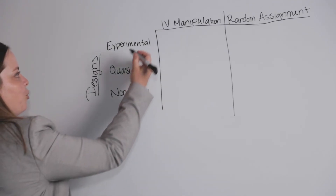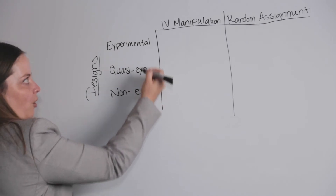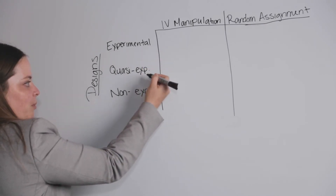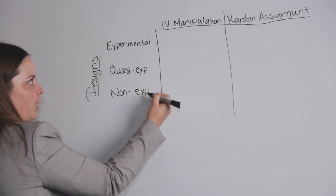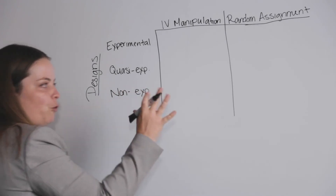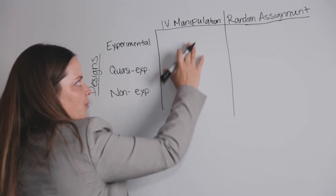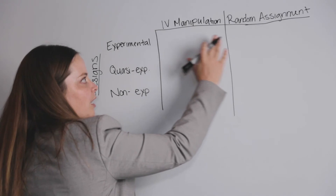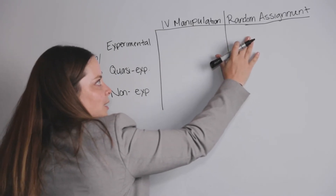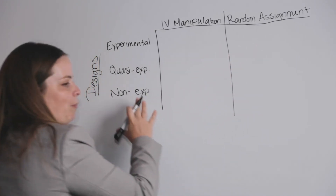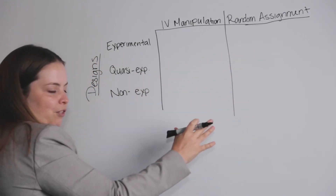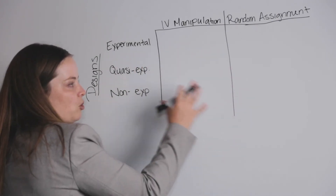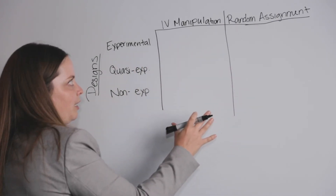So we have three different types of design here: experimental, quasi-experimental, and non-experimental. And we have our two distinguishing features at the top — independent variable manipulation and random assignment. We're going to make a quick graph to help you visualize how these three designs are related to each other.